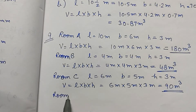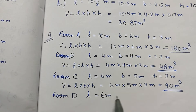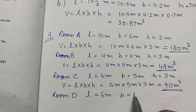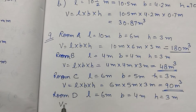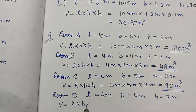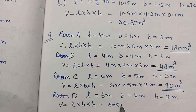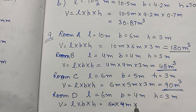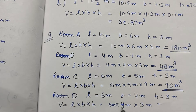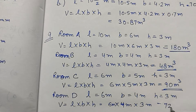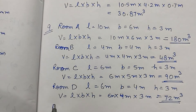Room D: length is 6 meters, breadth is 4 meters, and height is 3 meters. Volume is L into B into H — 6 into 4 meter into 3 meter. 3 times 4 is 12, and 6 times 12 is 72 meter cube.